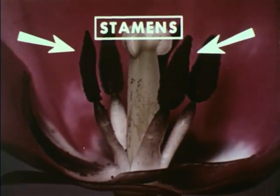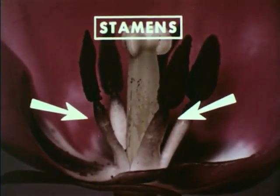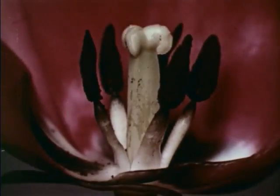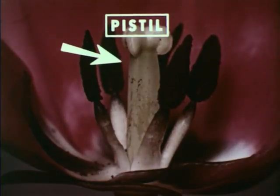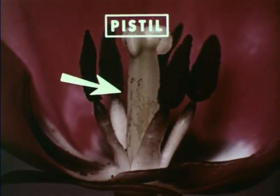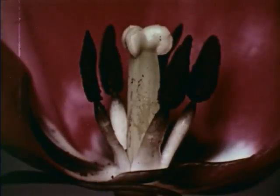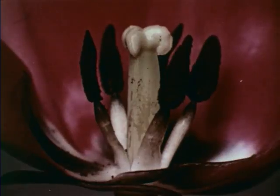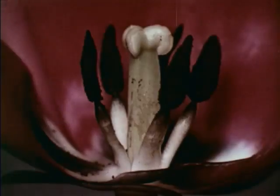These are the stamens, the male organs of the flower. This is the pistil, the female organ of the flower. Together these are the essential parts of the flower because in order to produce seeds, pollen from a stamen must reach the pistil.